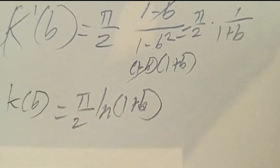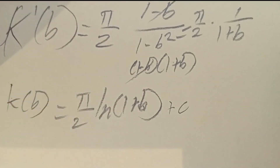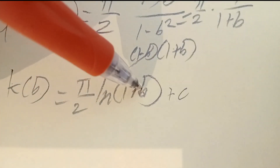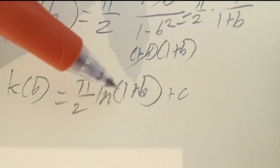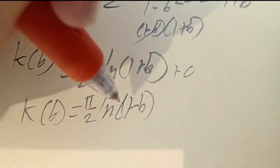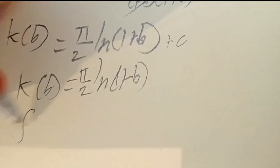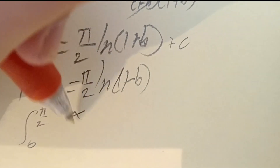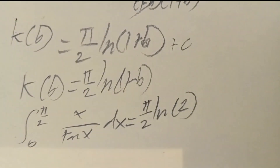To find C: K(0) collapses the integral to 0, so K(0) = 0. Plugging in 0 gives 0 = 0 + C, so C = 0. Therefore K(b) = pi/2 times ln(1+b). We're looking for K(1), so the integral from 0 to pi/2 of x over tangent x, dx equals pi/2 times ln(2). And that is the answer — three examples using Feynman's trick.